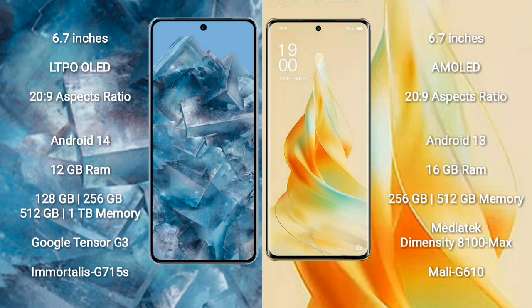Google Pixel 8 Pro comes with 12GB RAM and 128GB, 256GB, 512GB, or 1TB internal storage options, powered by the Google Tensor G3 processor with GPU Mali-G715. Oppo Reno 9 Pro comes with 16GB RAM and 256GB or 512GB internal storage, powered by the MediaTek Dimensity 8100 Max processor with GPU Mali-G610.